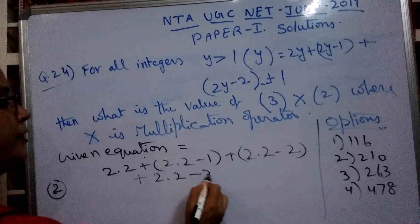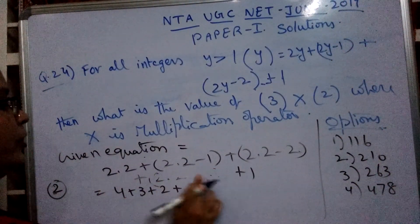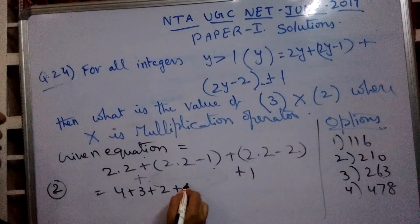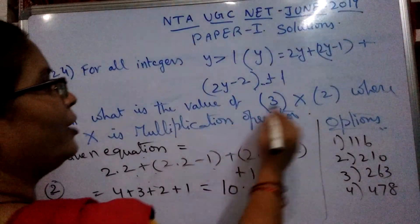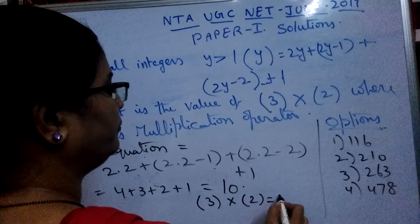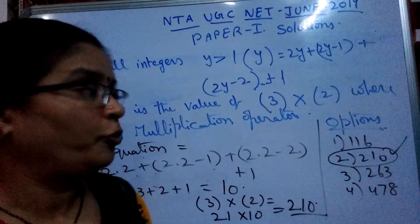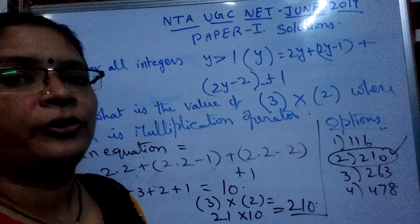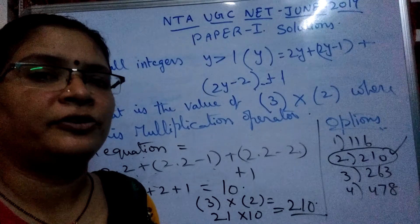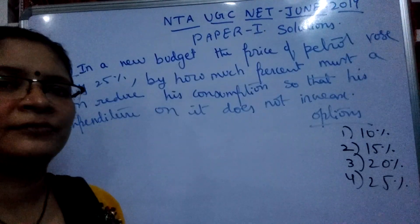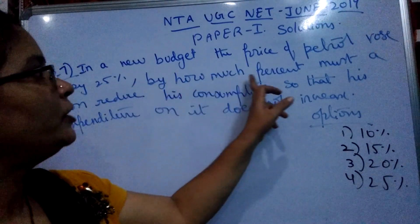Now I substitute Y = 2. That equals 2×2 + 2×(2−1) + 2×(2−2) + 1, which gives 4 + 3 = 7, 7 + 3 = 10. So Y⊗2 equals 10. Therefore, 3⊗2 equals Y⊗3 × Y⊗2 = 21 × 10 = 210. Option 2 is correct — 210 is the answer.